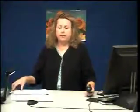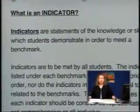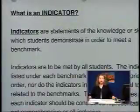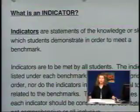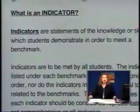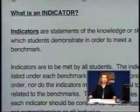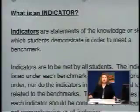Indicators are statements of the knowledge or skills which students demonstrate in order to meet a benchmark. Indicators are to be met by all students. The indicators listed under each benchmark are not listed in priority order, nor do the indicators include all the potential topics related to the benchmarks. The list of examples with each indicator should be considered representative, but not comprehensive or all-inclusive. In the appendix of the 2007 science education standards, you will find a glossary of terms and the grade level where the definition is applied to the standards document. Following the glossary is a bibliography.